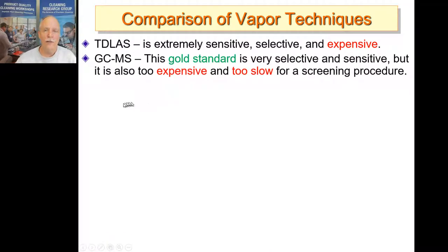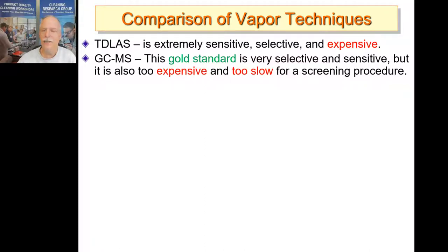GCMS is the gold standard for detecting and identifying explosives, but it's too slow for screening because it is a separation technique that takes time to run. It's not a very good screening technique but is the gold standard for forensic analysis.